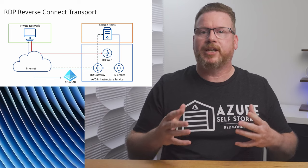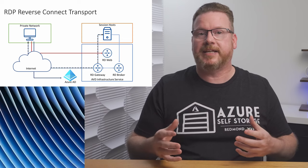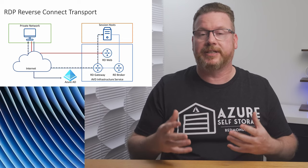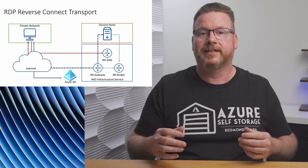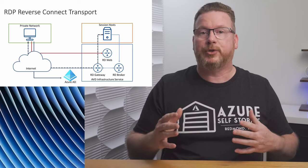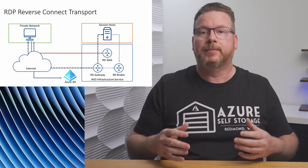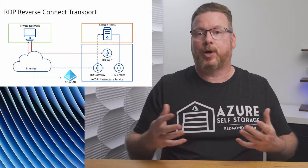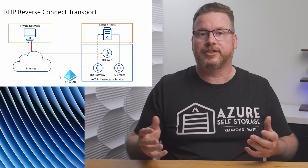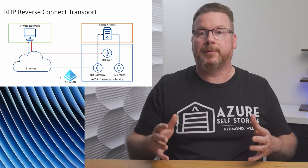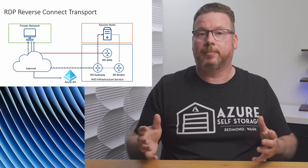That's the basic communication channel between the client and the session host. It works, but it uses TCP and all communication is relayed through the RD gateway. A direct UDP connection would be faster, but we don't have a private network connection. That's where ShortPath for public networks can help.